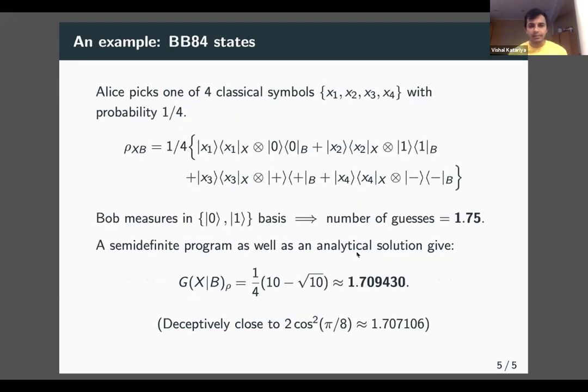We use this in an example with the BB84 task. Alice picks one of four symbols with uniform probability. Bob's states are zero, one, plus, minus. We have analytical and numerical solutions around 1.71, which is counterintuitively better than 1.75 you'd get in the zero-one basis. That's all. Thanks.